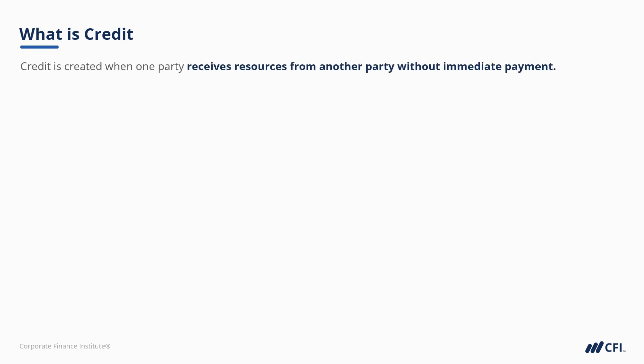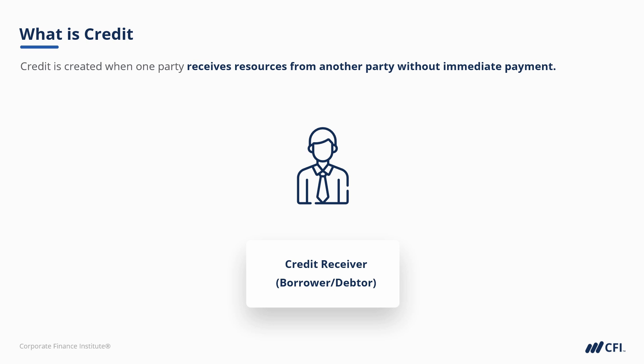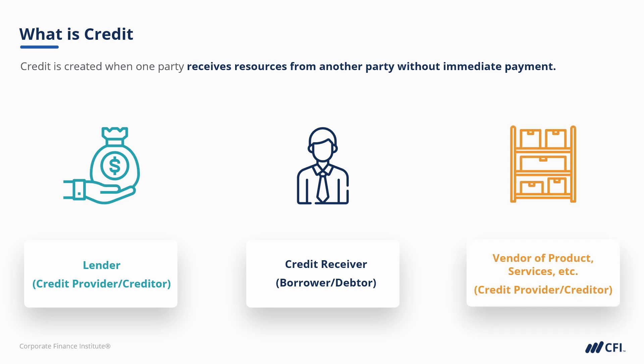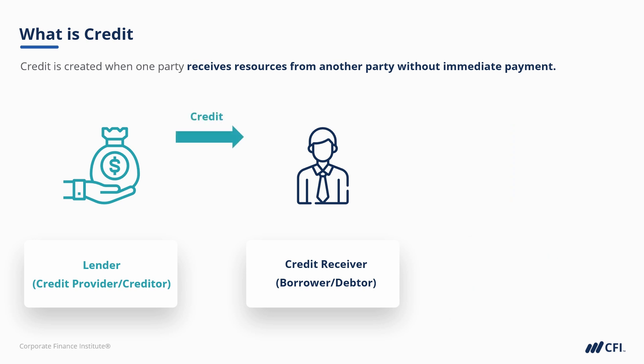What is credit? Credit is created whenever one party receives resources from another without immediately paying for those resources. At the center of this diagram, we have the receiver of credit, also known as the borrower or the debtor. The debtor can receive resources from one of two different types of counterparties: either a direct lender, as shown on the left, like a bank or a credit union, or from a vendor of products or services on the right. Both of those are referred to as credit providers or creditors. With the first example on the left, the lender extends credit to the borrower, either as cash directly or more typically by facilitating the purchase of an asset, like a home for a personal borrower or manufacturing equipment for a commercial borrower.